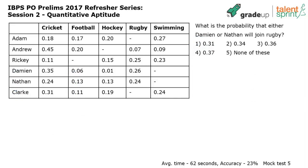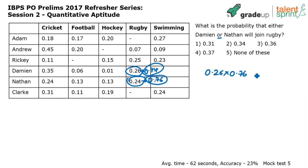Final question: what is the probability that either Damian or Nathan will join rugby? Same logic as the Adam/Andrew swimming question. P(Damian joins rugby) = 0.26, so not joining = 0.74. P(Nathan joins rugby) = 0.24, so not joining = 0.76. Answer = 0.26 × 0.76 + 0.24 × 0.74. Calculate to get the final answer.